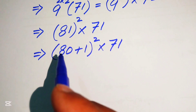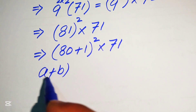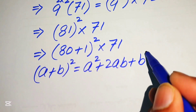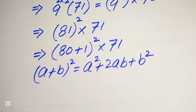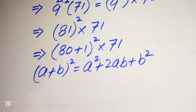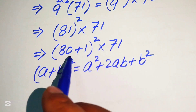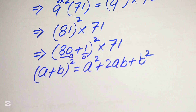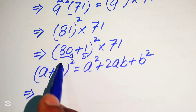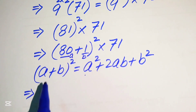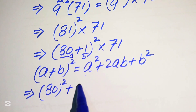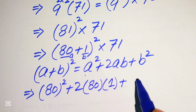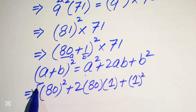We need to use the algebraic formula: a plus b, whole squared, equals a squared plus 2ab plus b squared. Here our a equals 80 and our b equals 1. Expanding the expression, we get a squared which is 80 squared, plus 2 times a times b which is 2 times 80 times 1, plus b squared which is 1 squared, all multiplied by 71.